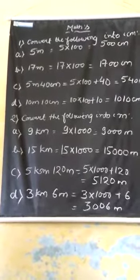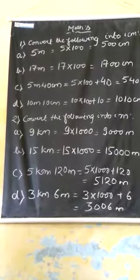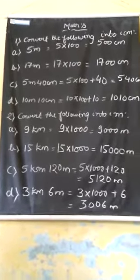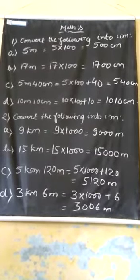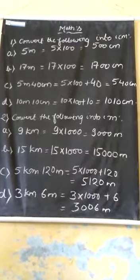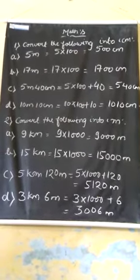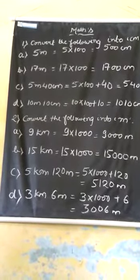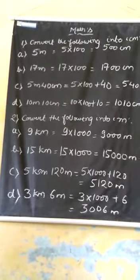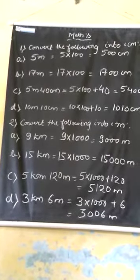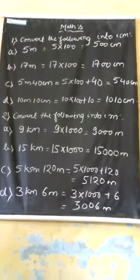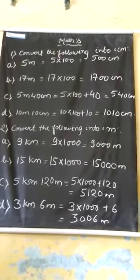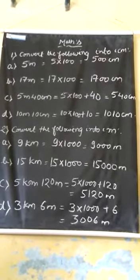Math. Our first question converts the following into centimeters. First, we know the conversion of meter to centimeter. We know one meter is equal to 100 centimeters. So to change meter into centimeter, we multiply the given number by 100. Five meters multiplied by 100 will be 500 centimeters.